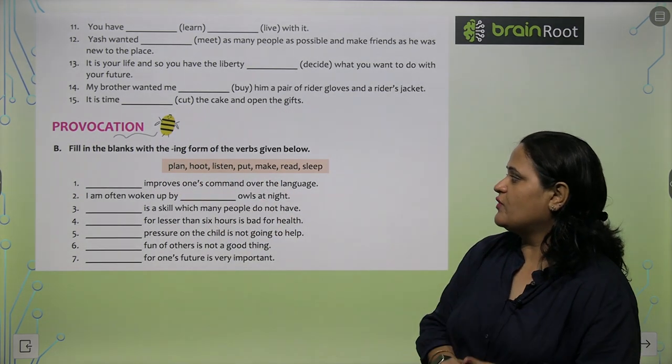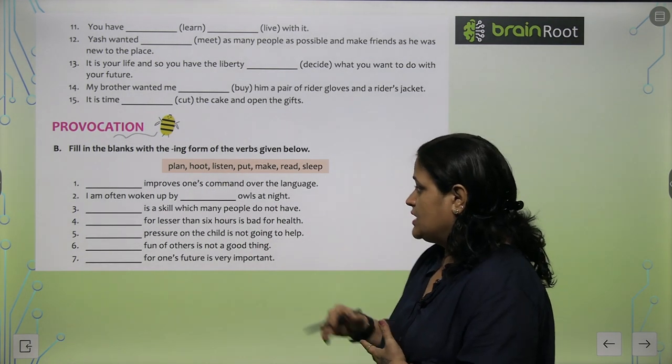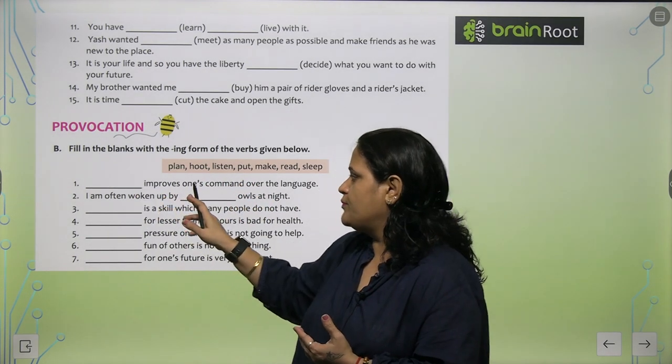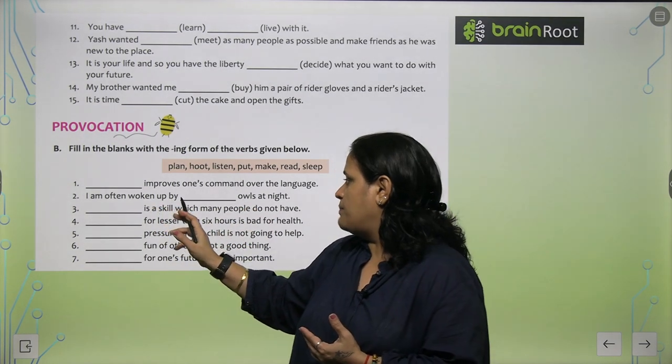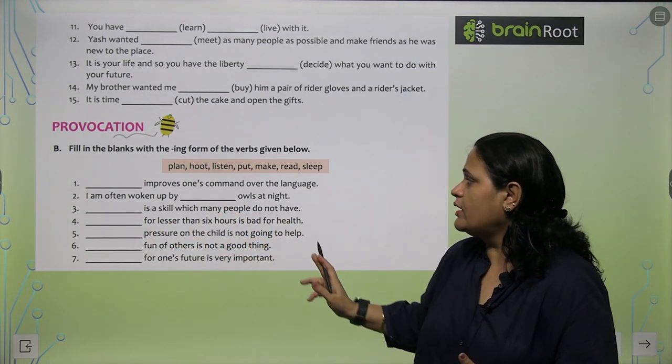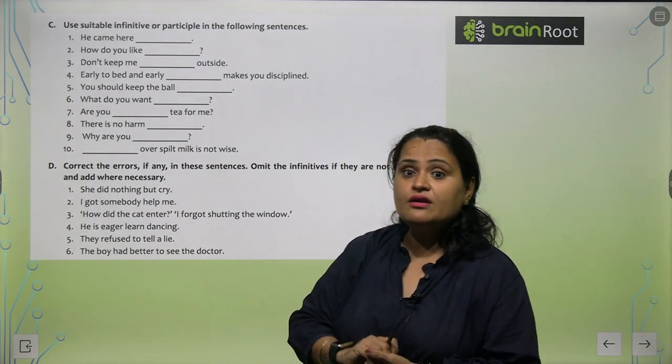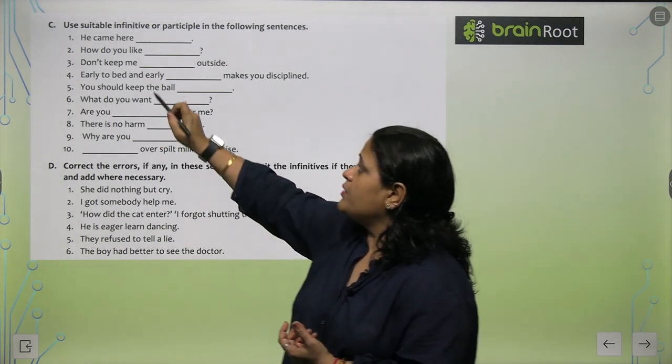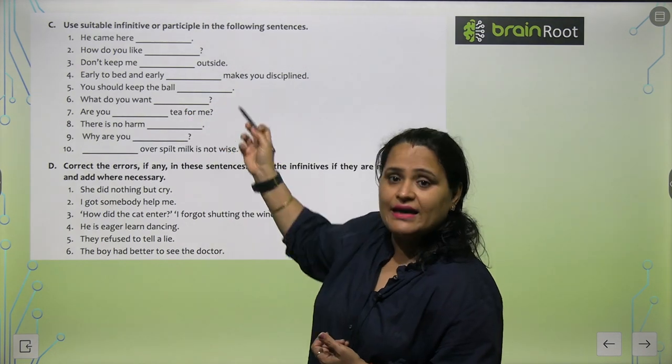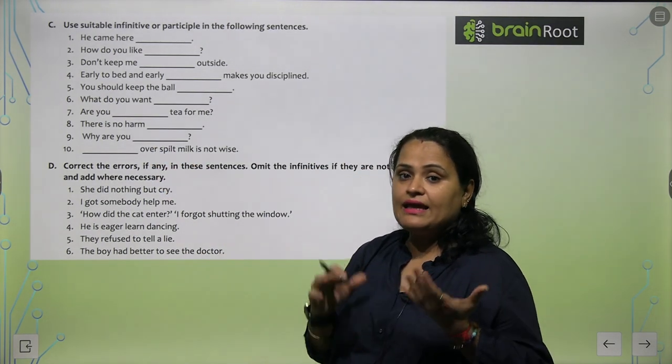Now fill in the blanks with the -ing form of the verbs given below. You have some verbs in hints and you will add the -ing form. Listening improves one's command over the language. I am often woken up by hooting owls at night. Reading is a skill which many people do not have. He came here for swimming. How do you like dancing? Don't keep me waiting outside. Rest of the questions, 7, 8, 9, 10, kindly think and do it yourself.